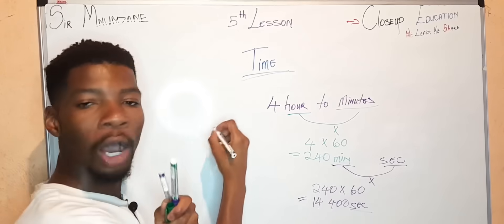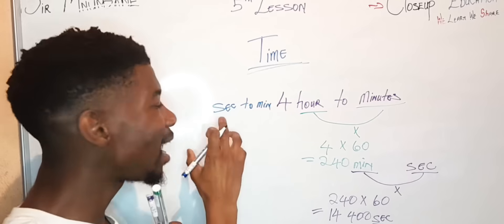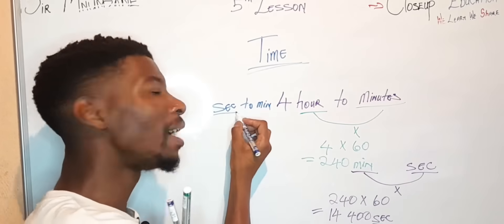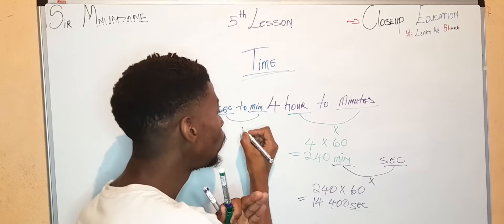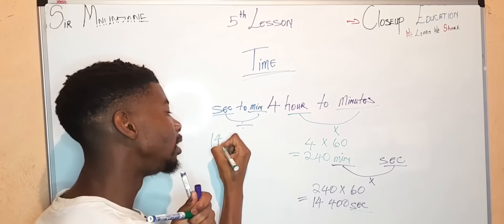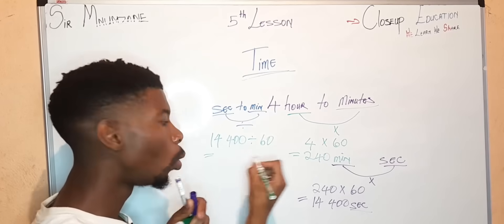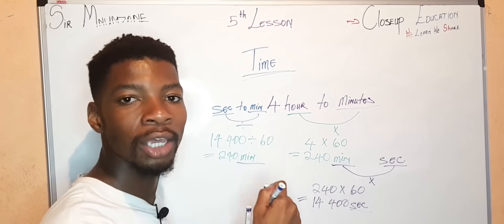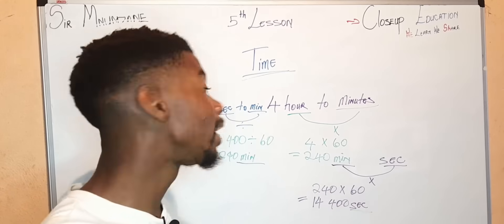Now let's do it vice versa — converting 14,400 seconds into minutes. We know seconds are smaller than minutes, so from smaller to bigger we divide. We say 14,400 divided by 60 equals 240 minutes. Don't forget the unit must change.